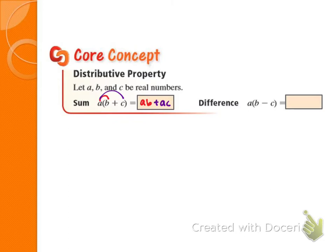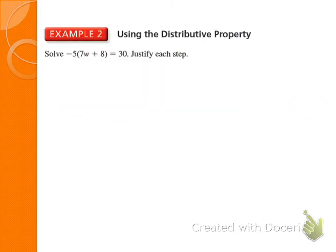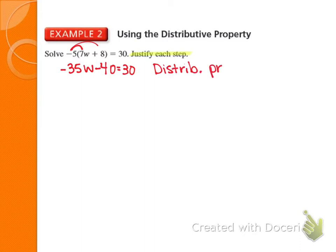One problem on the quiz had a distributive portion. A lot of people did A times B correctly, getting AB, but then just wrote C instead of AC — they didn't distribute to both terms. Make sure you multiply that front number times both pieces inside. If there's a minus sign, you'd have AB minus AC. Now use the distributive property on our problem. Notice it says 'justify each step.' First step: distribute. Negative 5 times 7w is negative 35w; negative 5 times 8 is negative 40. Write 'distributive property' to the side — not 'of equality,' because we didn't do it to both sides of the equal sign.